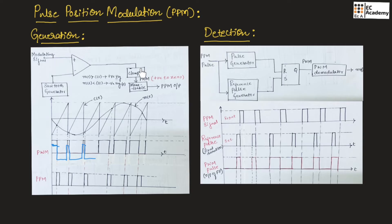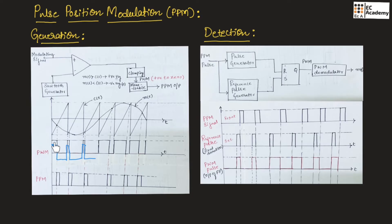The function of the clamping circuit is to clamp the output of the comparator from positive to 0, which means it will shift this waveform towards the positive side. It will produce output which is positive for M(t) greater than C(t) and output 0 for M(t) less than C(t). The clamping circuit shifts the waveform obtained from the comparator towards the positive side so that we get output as positive and 0 for the respective conditions.